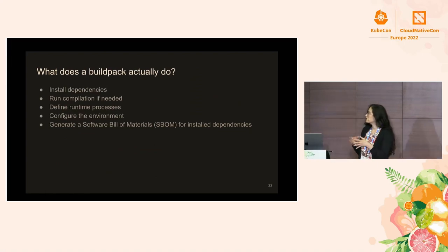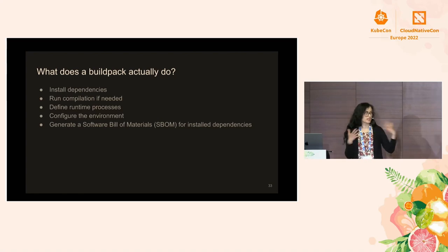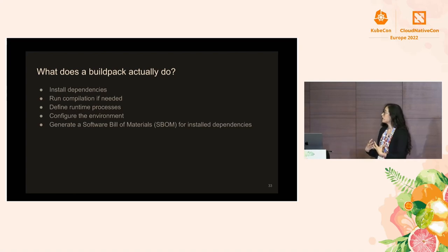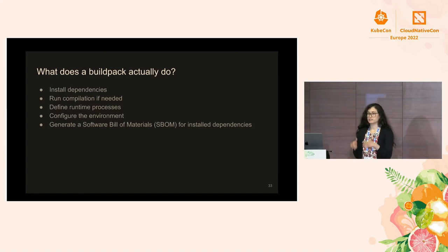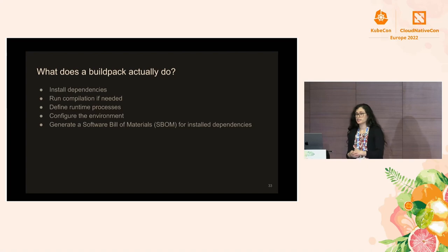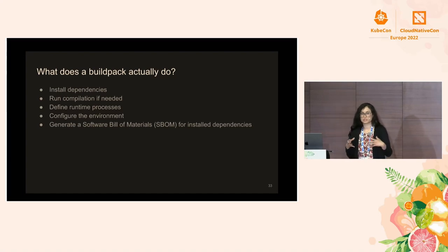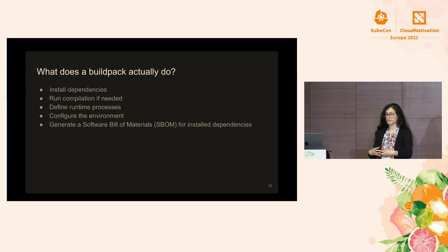The build binary is what actually does the work to turn source code into a runnable application. Multiple Buildpacks can work together — a collection of Buildpacks can each provide one piece of the total steps necessary to create something runnable. This allows great flexibility and interoperability between Buildpacks. Buildpacks can pull in dependencies, run compilation if needed, define processes to run when the application is started, configure the environment, and generate a software bill of materials to describe any dependencies added.